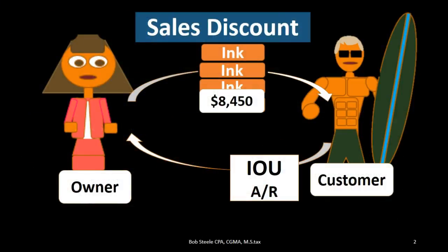We'll start off with the sales discount. We are the owner on the left-hand side making a sale to the customer on the right-hand side, and we're going to provide a discount on that sale. Typically what will happen is we have already provided the inventory, we have the IOU already, and we've provided that inventory at full price. Customarily we say to the customer: we would like the cash faster, we want to improve our cash flow. Therefore, if you give us the money within a certain time period, we'll give you a discount.